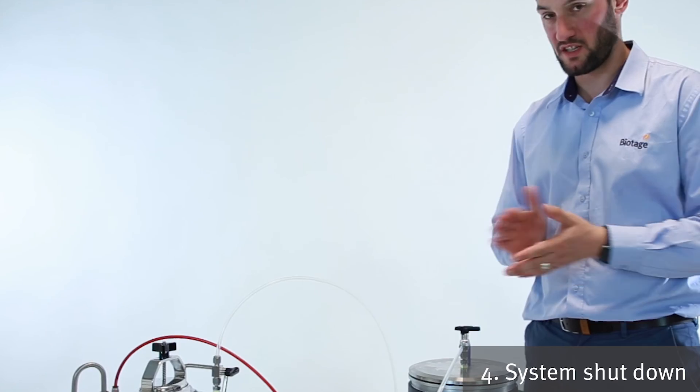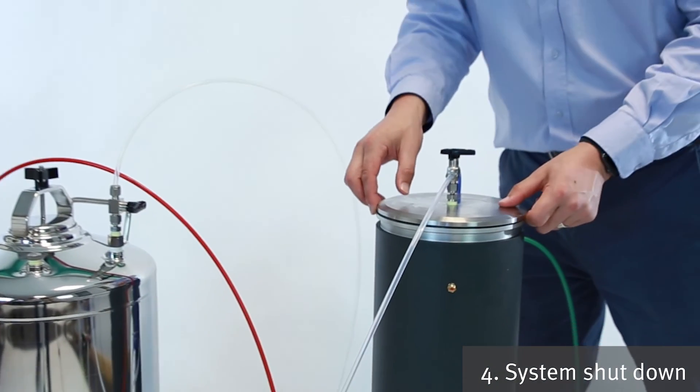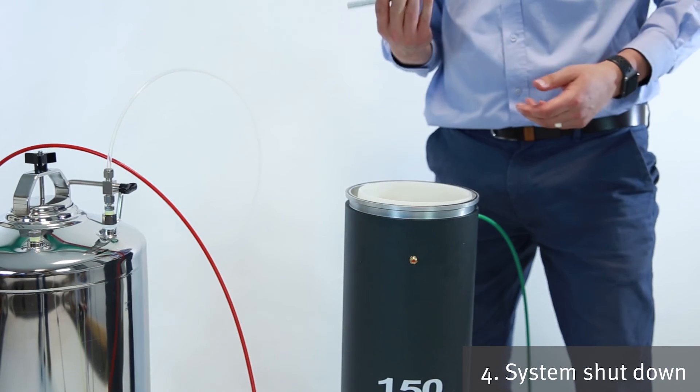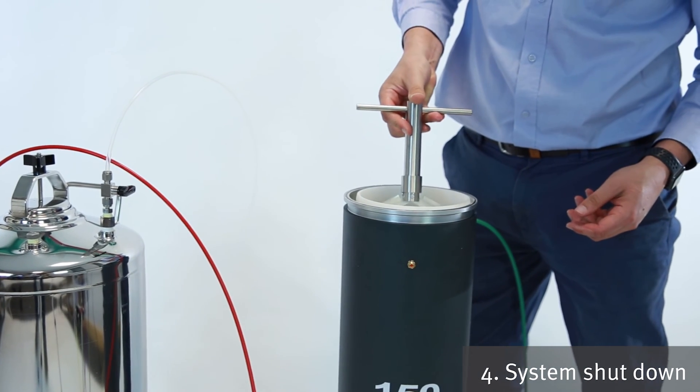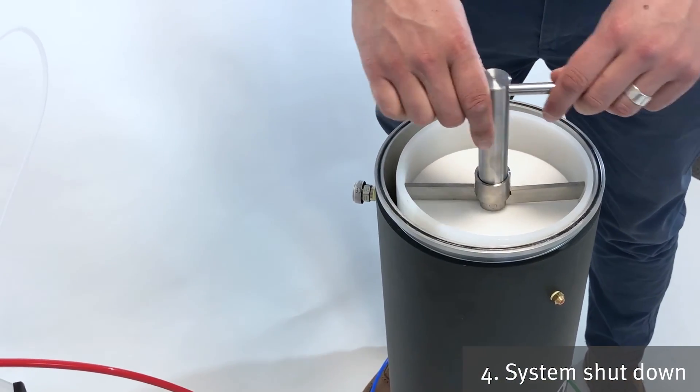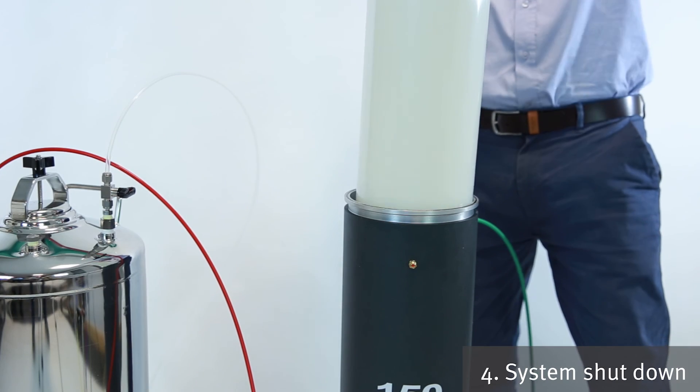Okay, so once you've finished your run and you want to take the cartridge out, take the V-band clamp off. Remove the head. And then you can use this cartridge removal tool which sits on the top of the cartridge. Push the band down and then you can lift it out.